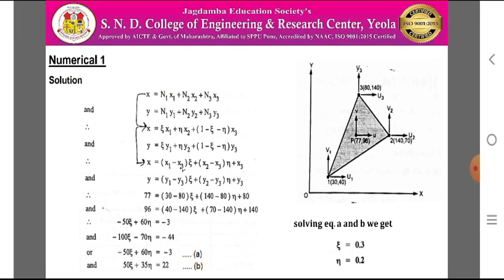Substituting the coordinate values, we get: 77 = (30 − 80)·epsilon + (140 − 80)·neta + 80, and 96 = (40 − 140)·epsilon + (70 − 140)·neta + 140. This gives equation (a): −50·epsilon + 60·neta = −3, and equation (b): −100·epsilon − 70·neta = −44, yielding: −50·epsilon + 35·neta = 22. By solving equations (a) and (b), we obtain the values of epsilon and neta.